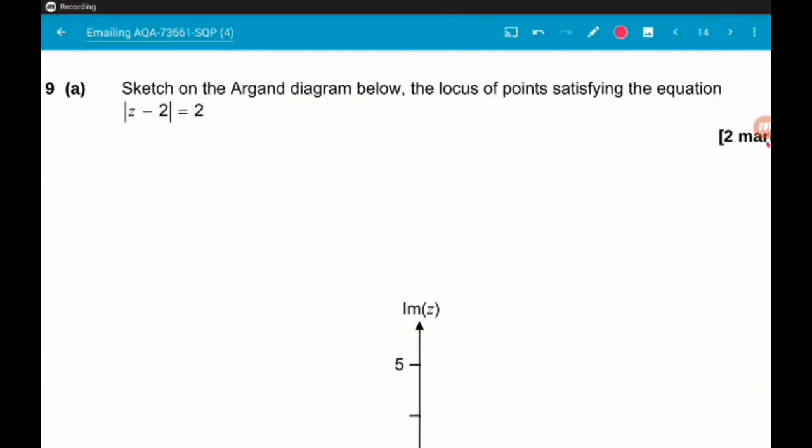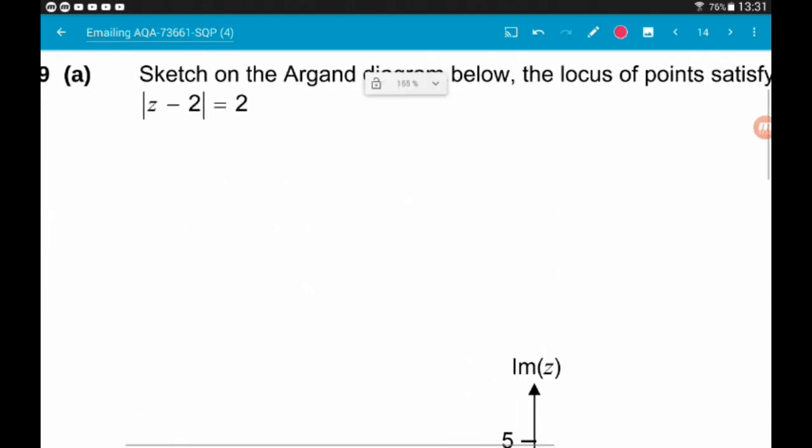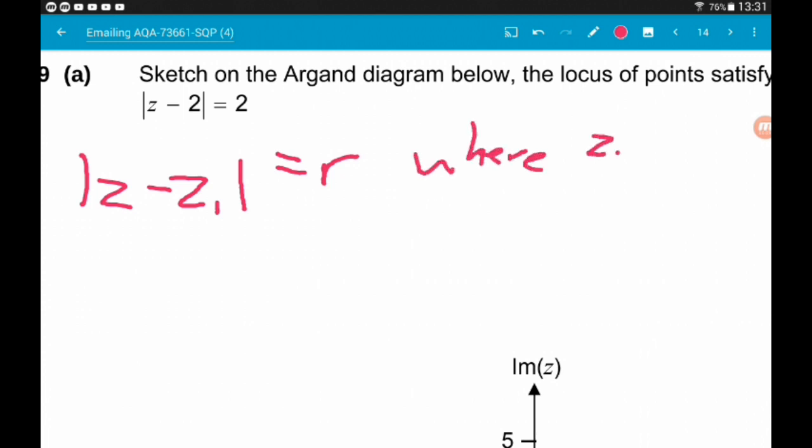Okay, question 9A wants us to sketch on the Argand diagram below the locus of points satisfying the equation mod of z minus 2 is equal to 2. Hopefully we will see this equation of a circle before, mod of z minus z1 is equal to the radius of the circle where z1 is the centre of the circle.